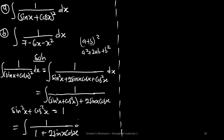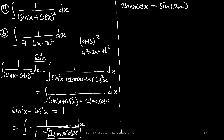We also have the identity which says that 2 sin x cos x is equal to sin 2x. So the entire expression 2 sin x cos x can be replaced by sin 2x. This expression is finally going to be the integral of 1 on (1 + sin 2x) dx.